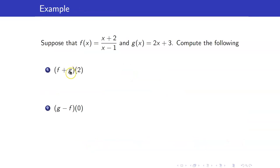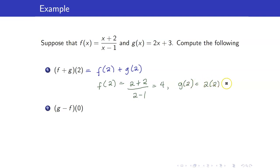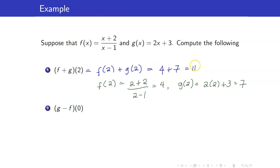Let us consider this example. We want f plus g of 2. By definition, f plus g of 2 is f of 2 plus g of 2. f of 2 is 2 plus 2 over 2 minus 1, which is equal to 4. And g of 2 is equal to 2 times 2 plus 3, which is equal to 7. Therefore, f of 2 plus g of 2 is equal to 4 plus 7, which is equal to 11.